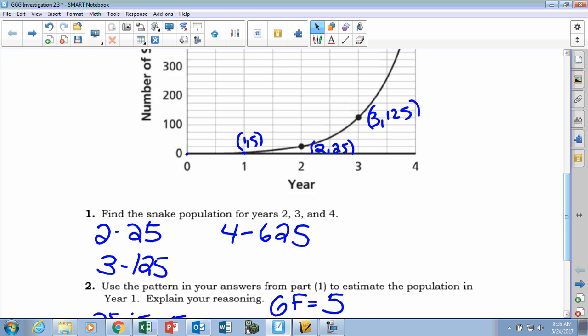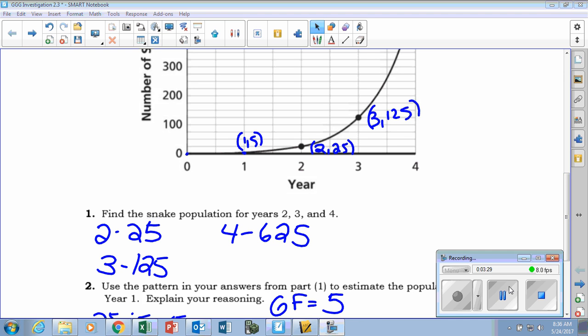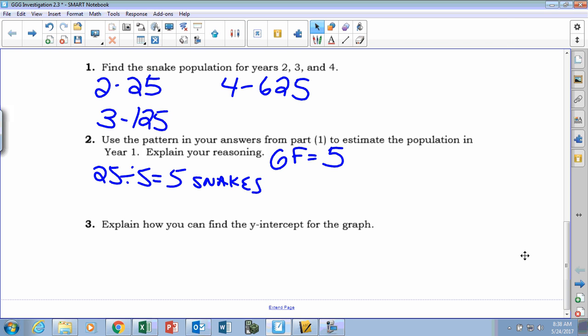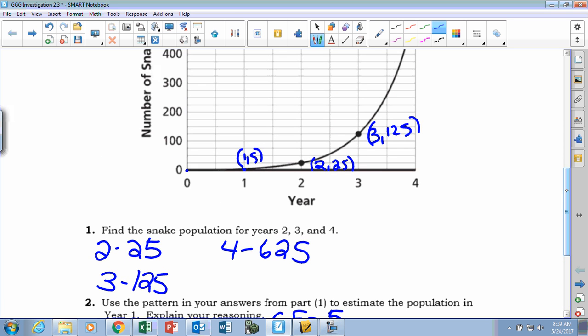All right, what'd you guys find for the y-intercept? One? Wait, how'd you find that? So you continue to work backwards, right? So he took the previous one, right, year one, it was five snakes. So he took five and divided it by five to get one. So the y-intercept, at the very beginning of this, there was one snake.